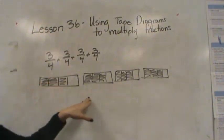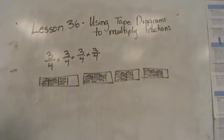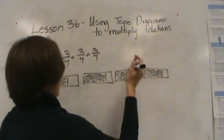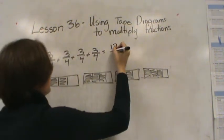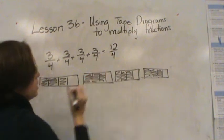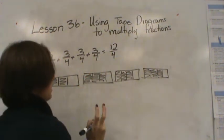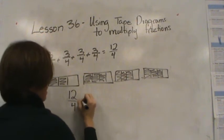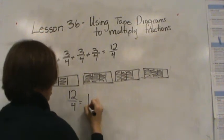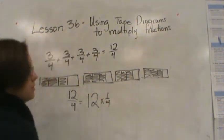So here's 3/4 plus 3/4 plus 3/4 plus 3/4. Now let's talk about how many fourths we have: 3, 6, 9, 12. So that's equal to 12/4, which is the same as saying two things. 12/4 is the same as saying 12 times 1/4.